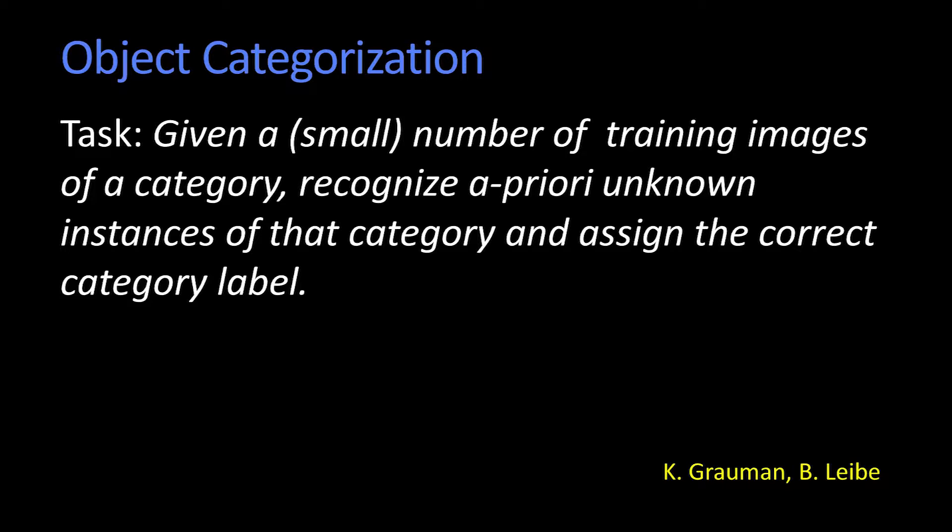Object categorization can be described a variety of ways. This was a slide from Kristen and Bernd Leibe, and then I changed it a little bit. Generically, it's kind of like this: given some number of training examples, training images of a category, recognize a priori unknown instances of that category and assign the correct label. Now, you'll notice that I put down small in parentheses.